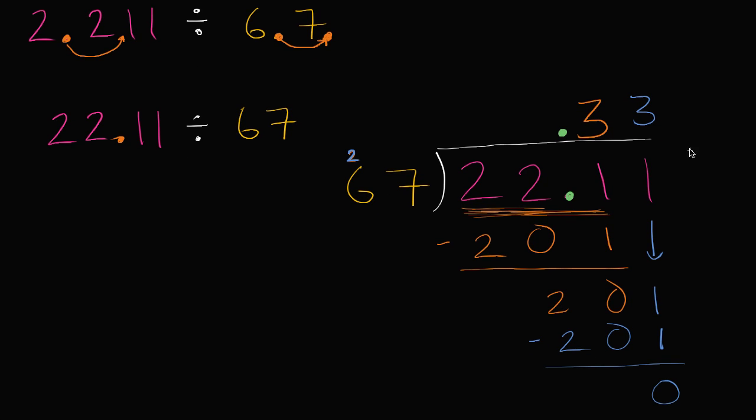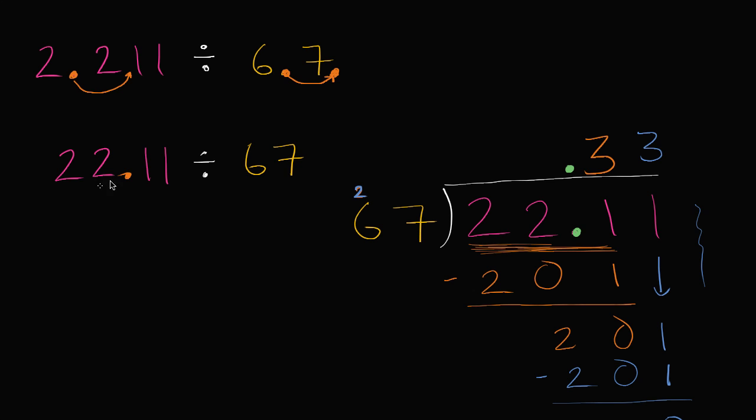Because we have no remainder, and there's nothing here left to bring down. And so 22.11 divided by 67 is—and we could throw a 0 here just for good measure—it's 0.33. This is equal to 0.33. And we're done.